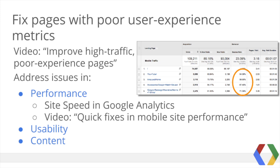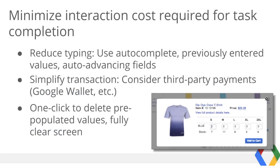We could test whether wearables is a helpful category name for t-shirts, and whether moving the category to one of the earlier options in the list increases micro-conversions for this task. Fixing pages with poor user experience metrics was filmed as a separate video — areas to focus for improvement are performance, usability, and content. Once that's complete, look to minimize the interaction cost required for completion — in other words, create a workflow that reduces typing. Perhaps use auto-complete, previously entered values, or auto-advancing fields. To simplify checkout, you can offer third-party checkout options. One click to delete pre-populated values also saves interaction cost, rather than requiring the user to repeatedly hit delete for each character.